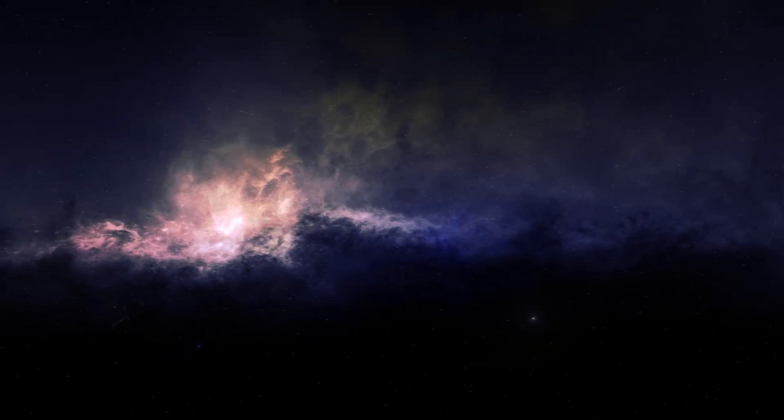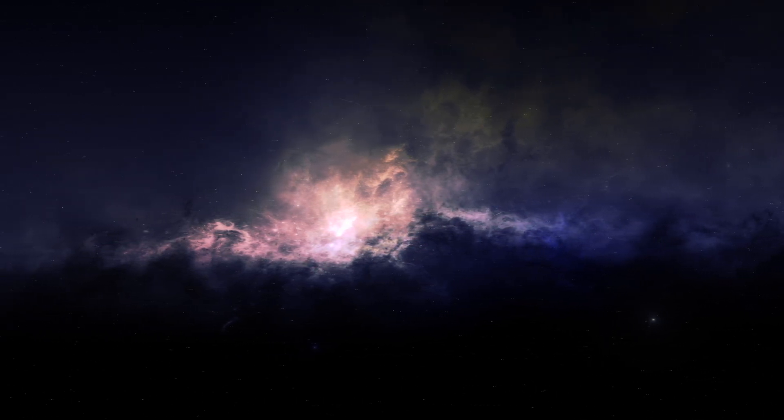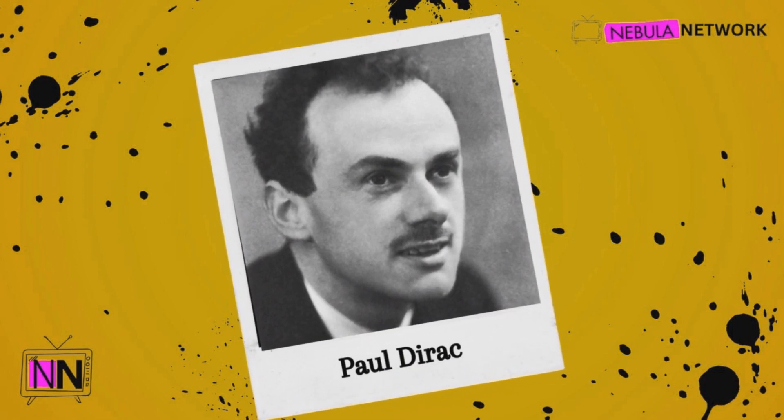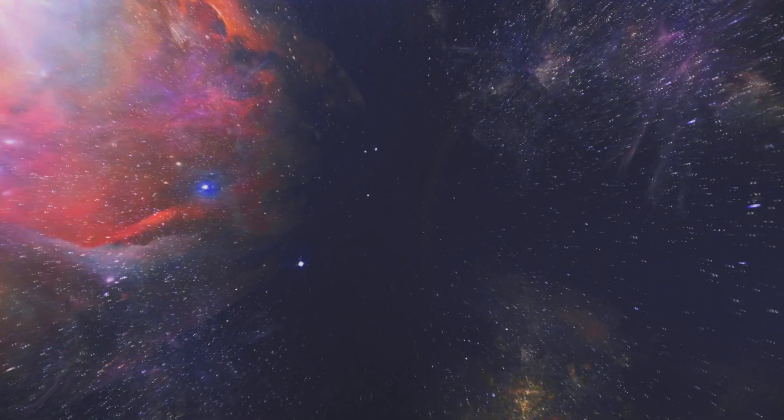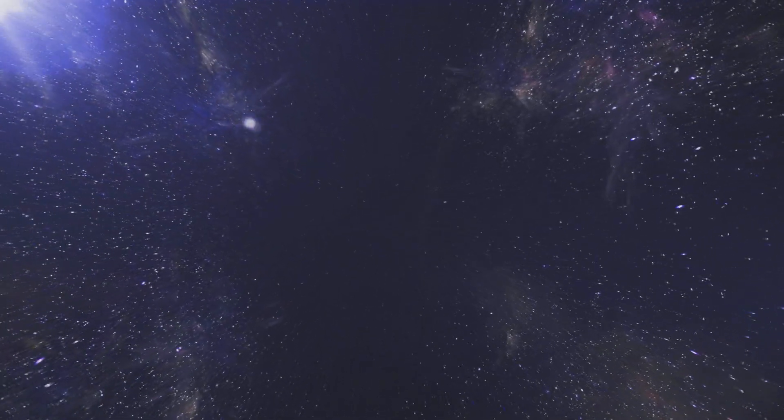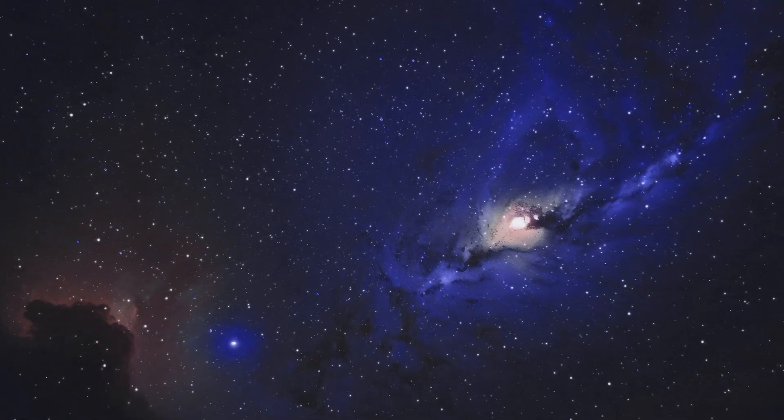Furthermore, Gupta introduces the concept of evolving coupling constants, as theorized by Paul Dirac. Paul Dirac was a renowned theoretical physicist who made significant contributions to the field of quantum mechanics. These coupling constants are fundamental physical constants that govern the interactions between particles. According to Dirac, these constants might have varied over time.